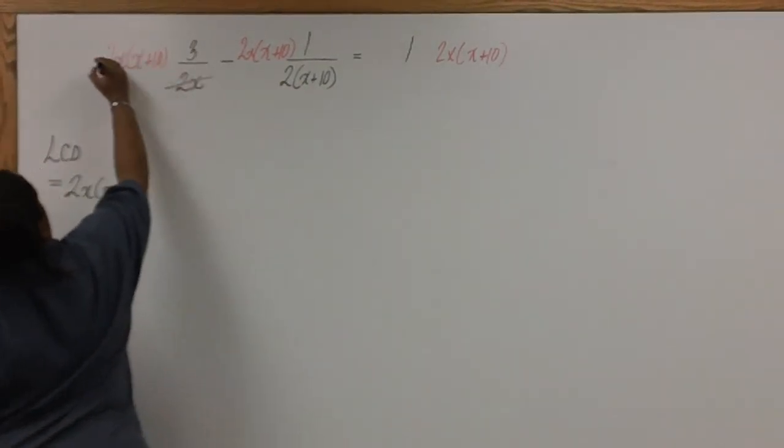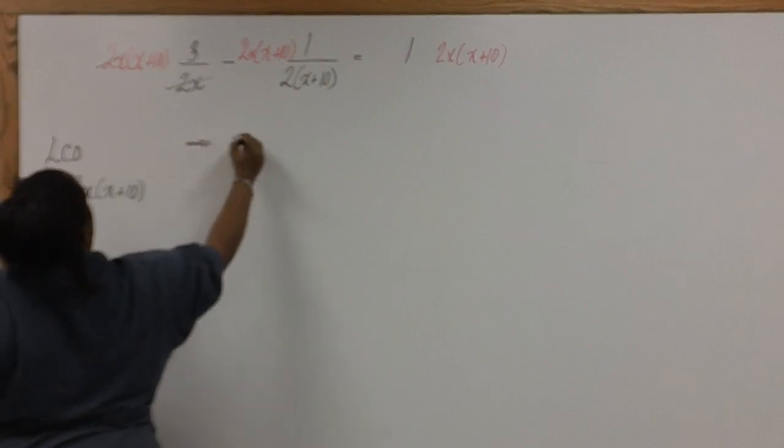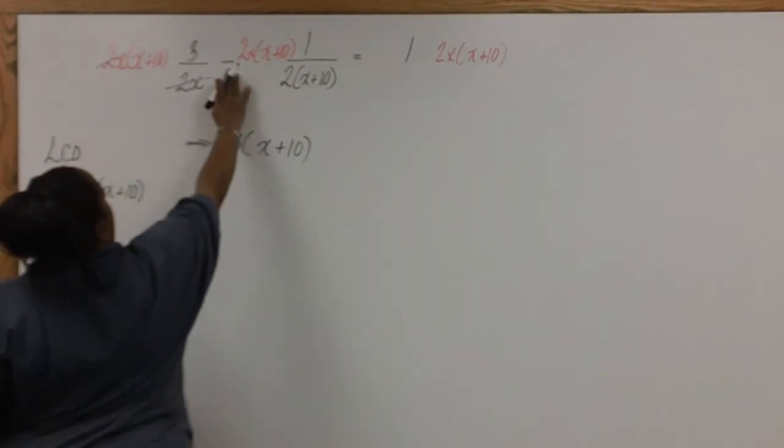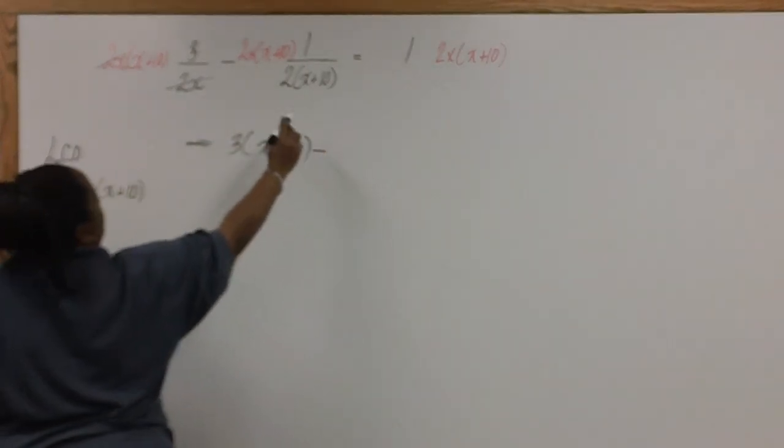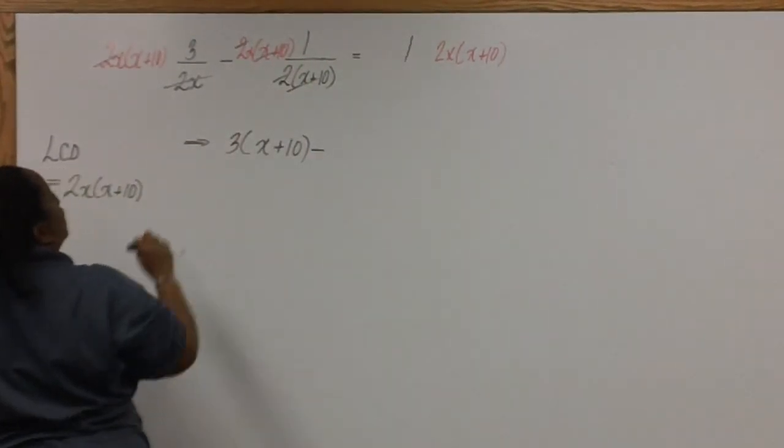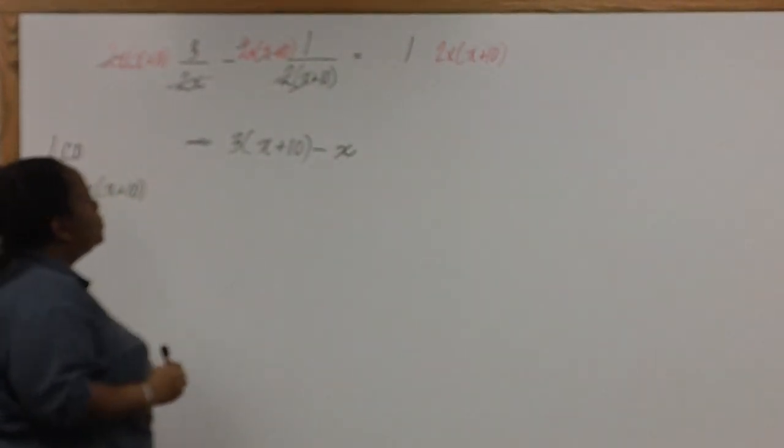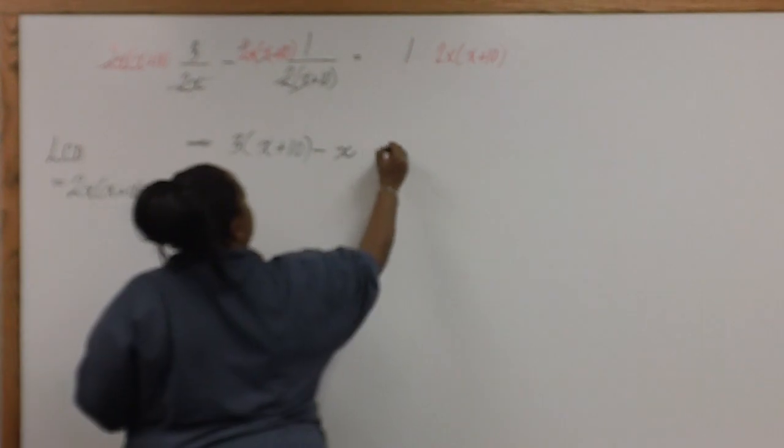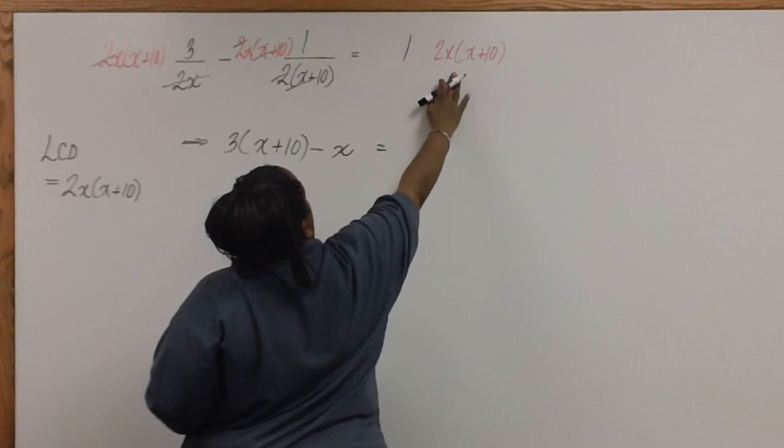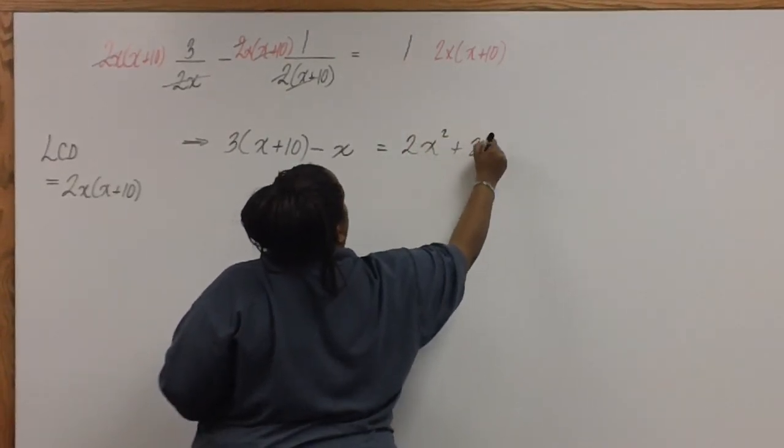Here the 2x cancels and we're left with 3 times x plus 10. Don't forget to bring down your minus sign. Here the 2's cancel and the x plus 10's cancel and we're left with x times 1 which is just x. And here since we're multiplying all this times 1 we'll get 2x squared plus 20x.